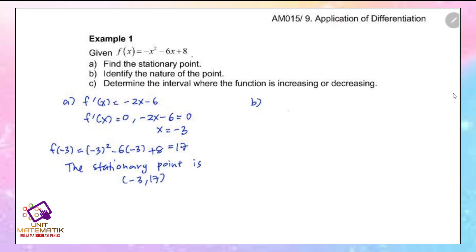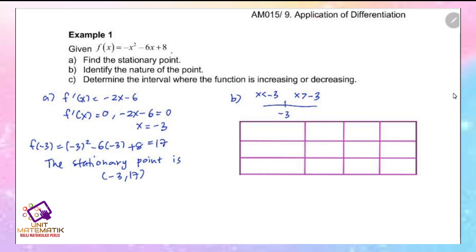To determine the nature of the point, we first determine the intervals. The critical value is x equals negative 3, giving two intervals: x less than negative 3 and x greater than negative 3. For the table, we have three columns: interval, sign of f prime, and gradient. Write the intervals in the first column, with x equals negative 3 in the middle.